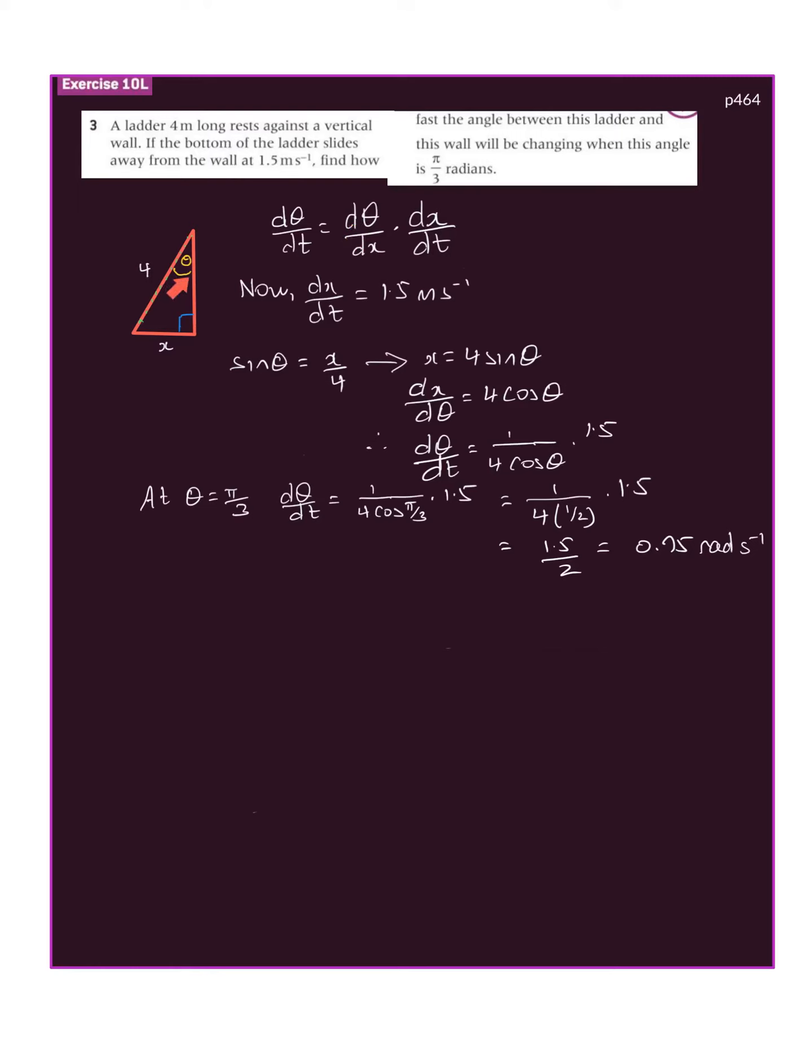What we need to find is the relationship between θ and x. We can do that because we know that sin θ = x/4, so x = 4 sin θ. Now we want dθ/dx, but we have our expression in terms of x in terms of sin θ. So we do dx/dθ, which is 4 cos θ.